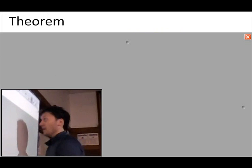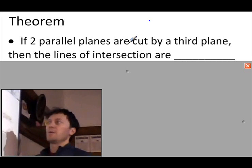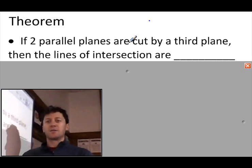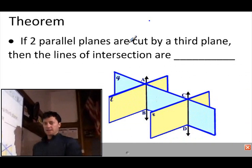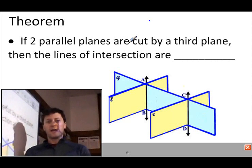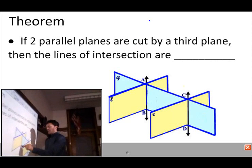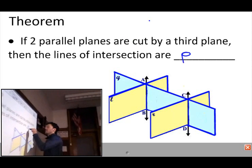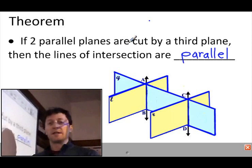There's a theorem that goes with parallel planes: if two parallel planes are cut by a third plane, then the lines of intersection are — think about it. In this diagram, the two yellow parallel planes are L and R, and plane Q comes along and intersects both of them. The lines of intersection — AB and CD — are parallel. They're always going to be parallel when two parallel planes are cut by a third plane.